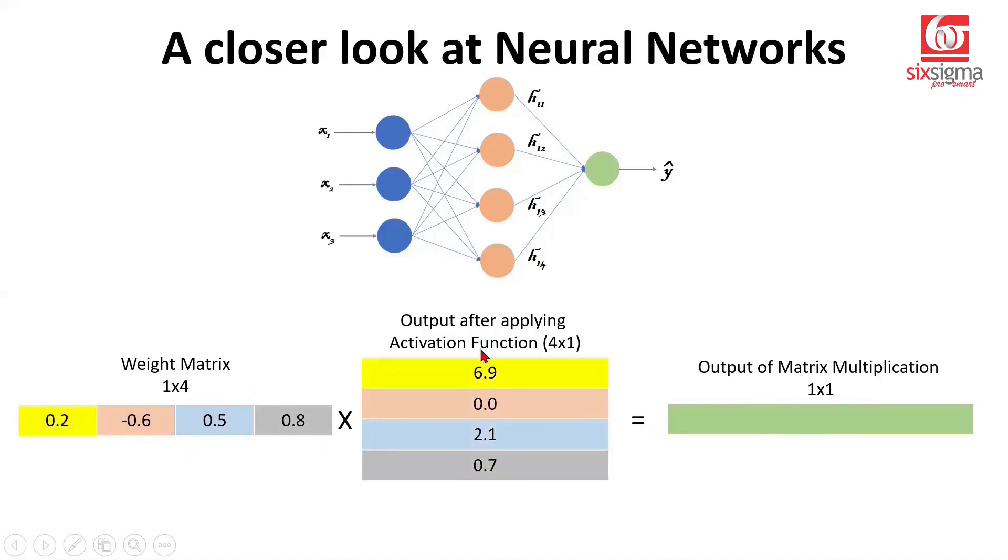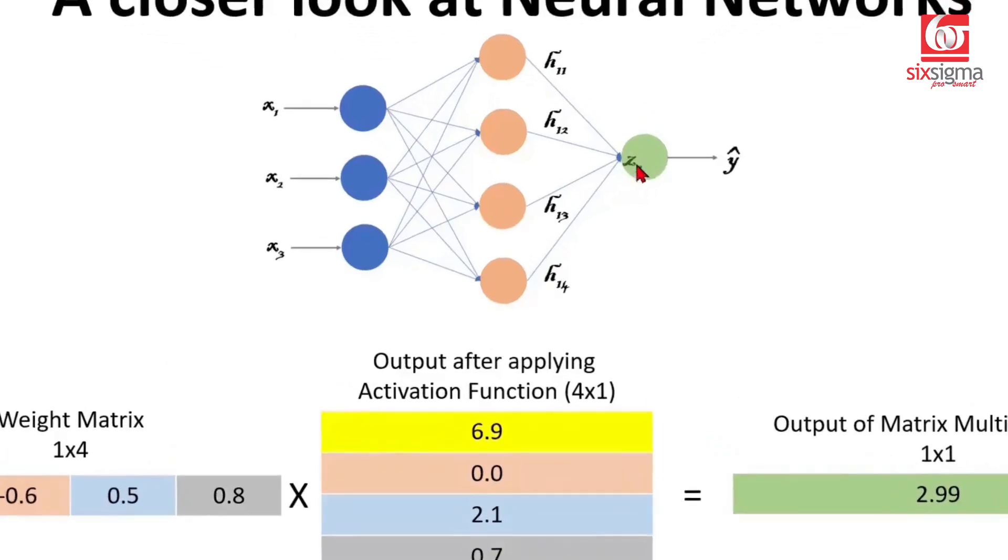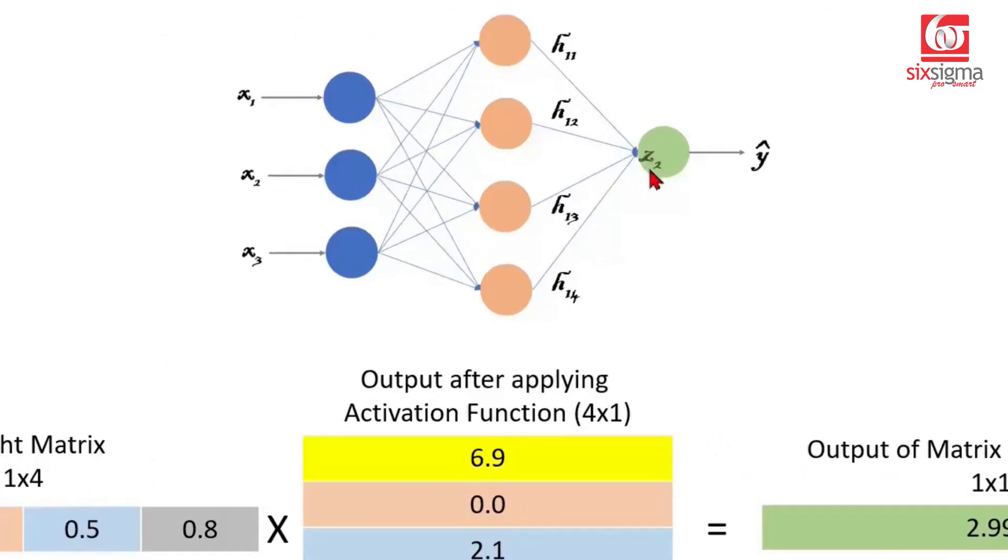Again, if you do this multiplication element wise and I've done the color coding, here's what you get. And if you simplify this expression, you'll get something like a 2.99 here. Now what is this 2.99? This 2.99 is nothing but Z2, which is a weighted sum of the output from the hidden neuron.